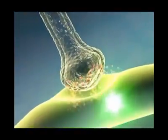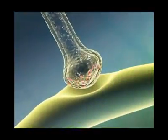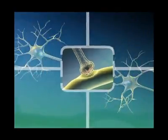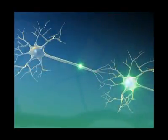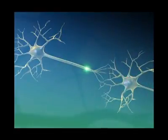Neurotransmitters allow an impulse to cross from the axon of one neuron, across the synapse, and onto a receiving dendrite on another neuron.